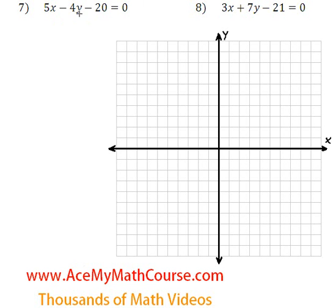Determine the x and the y-intercept, then graph each line, starting with 7. OK, so we determine the y-intercept by plugging 0 in for x.